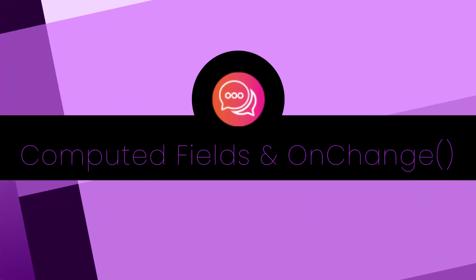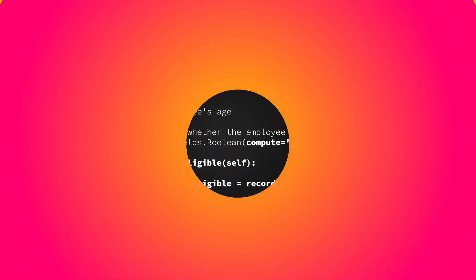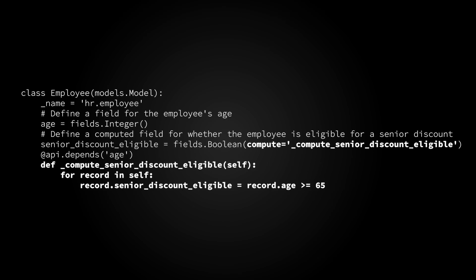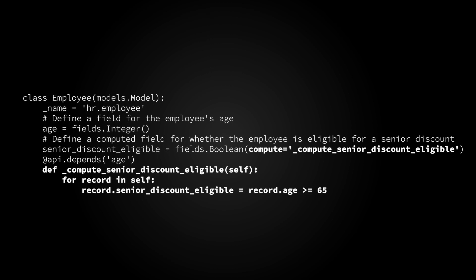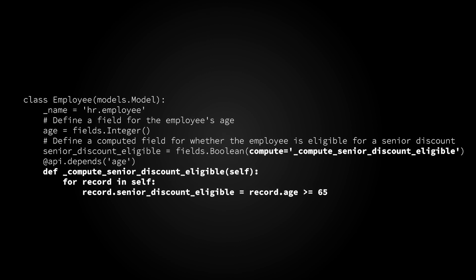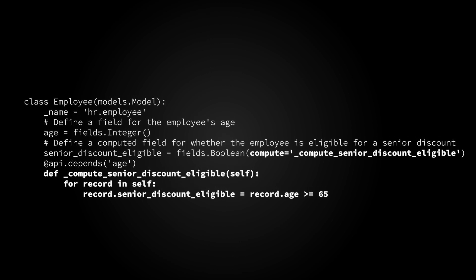Computed fields and on-change methods are powerful tools for dynamically computing the value of a field or for triggering actions when a field's value changes. They can also be used in complex ways to implement intricate business logic. These fields can be stored or computed on the fly and can depend on another model's fields. In this example, the senior_discount_eligible field is computed based on the age field. Whenever an employee's age changes, their senior_discount_eligible field will automatically be updated.